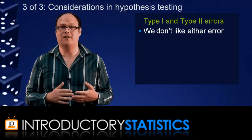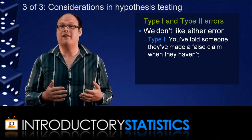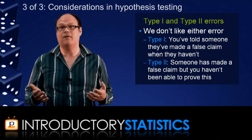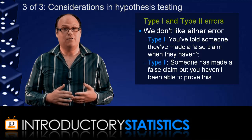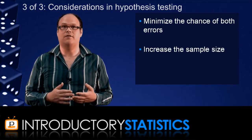Not surprisingly, both kinds of errors are undesirable. Put simply, a type 1 error means that you've concluded that someone has made a false claim when they haven't. A type 2 error means that someone has made a false claim but you've failed to unveil that. Fortunately, you can decrease the likelihood of both kinds of errors by increasing the size of your sample.